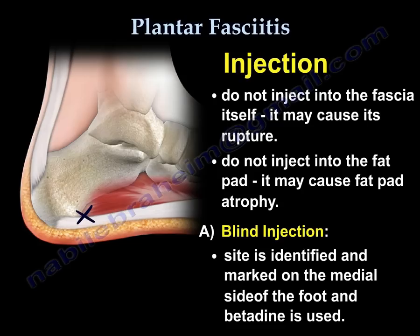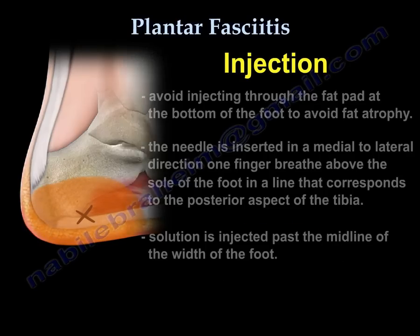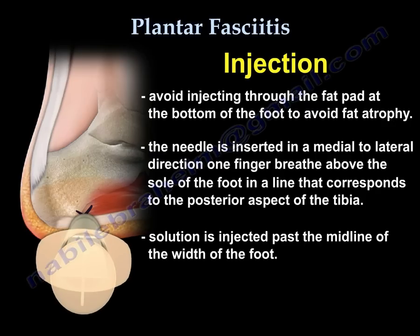The site is first identified and marked on the medial side of the foot and betadine is used. Avoid injecting through the fat pad at the bottom of the foot to avoid fat atrophy. The needle is inserted in a medial to lateral direction, one finger breadth above the sole of the foot, in a line that corresponds to the posterior aspect of the tibia. The solution is injected past the midline of the width of the foot.